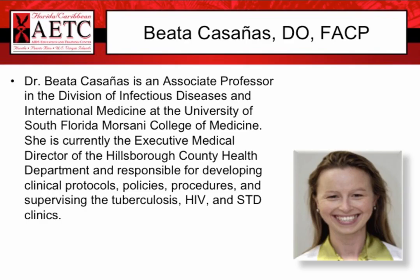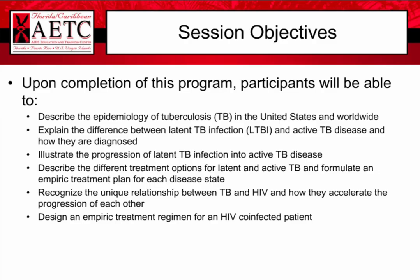Thank you so much, Joanne, for such a warm introduction. Today's objectives are to describe the epidemiology of tuberculosis in the United States and the world; look at the differences between latent and active tuberculosis; describe how progression between latent and active TB happens; discuss treatment options; and explore the deadly relationship between tuberculosis and HIV, including treatment regimens, drug interactions, and problems in managing co-infected patients.